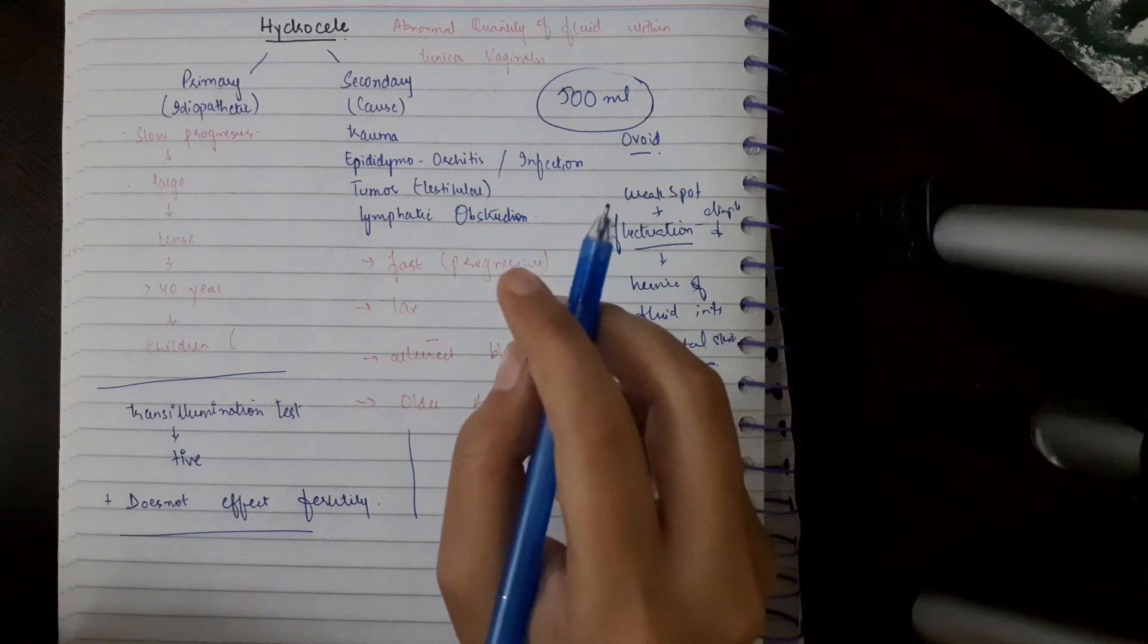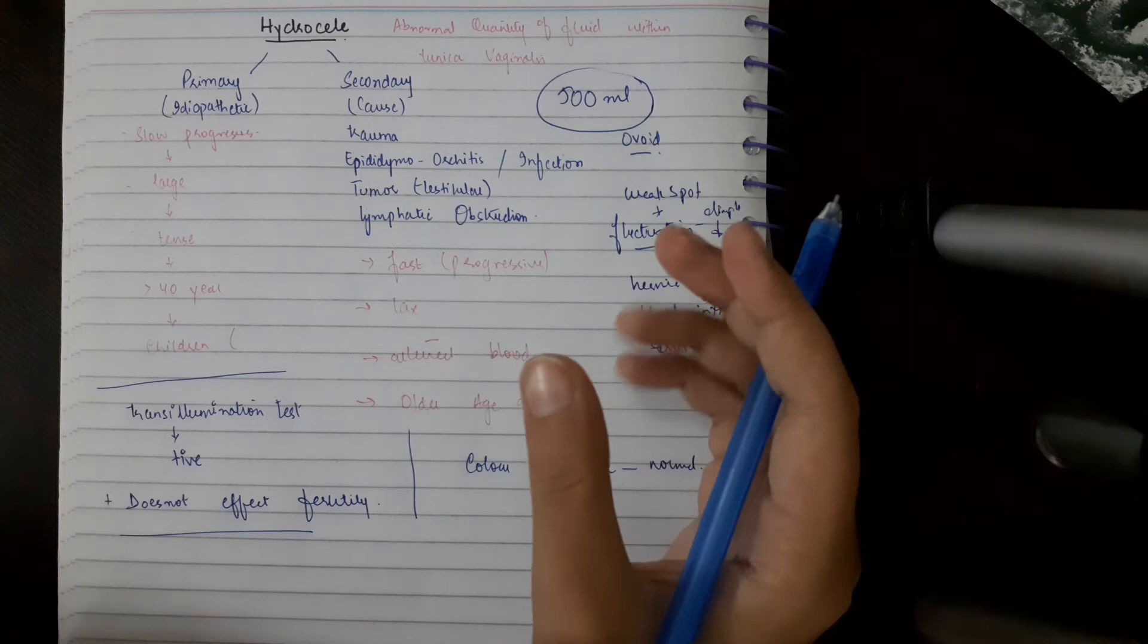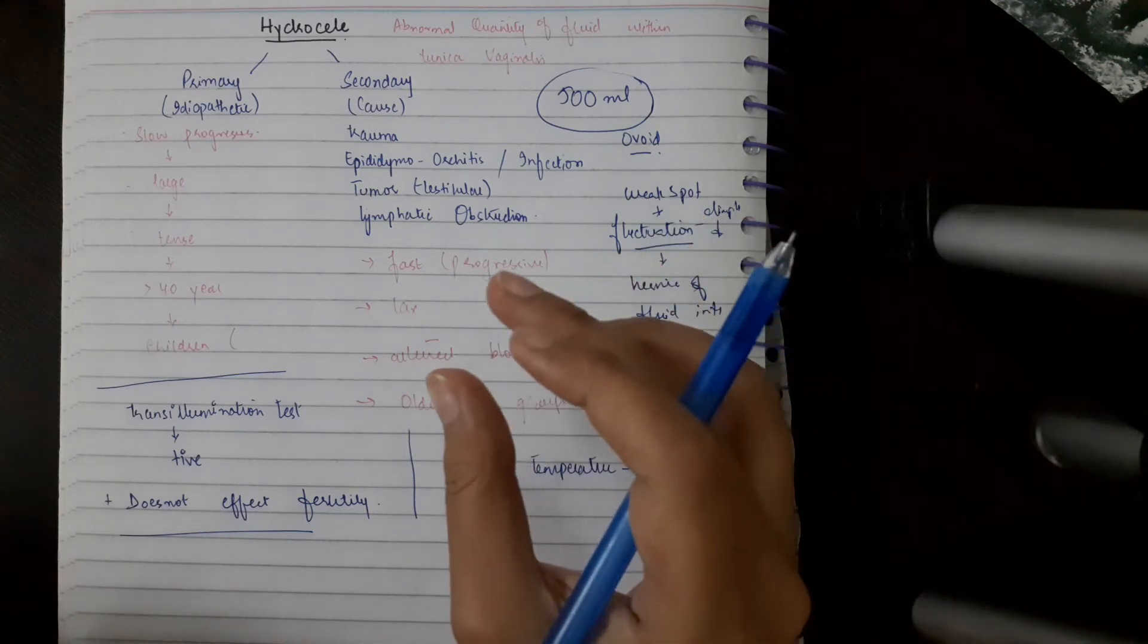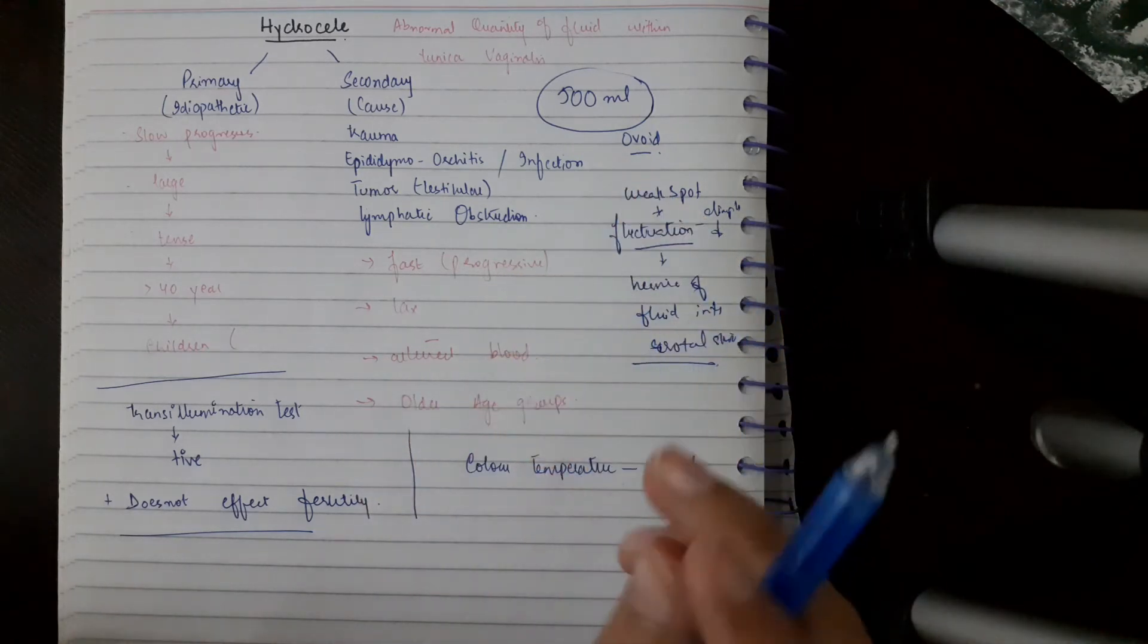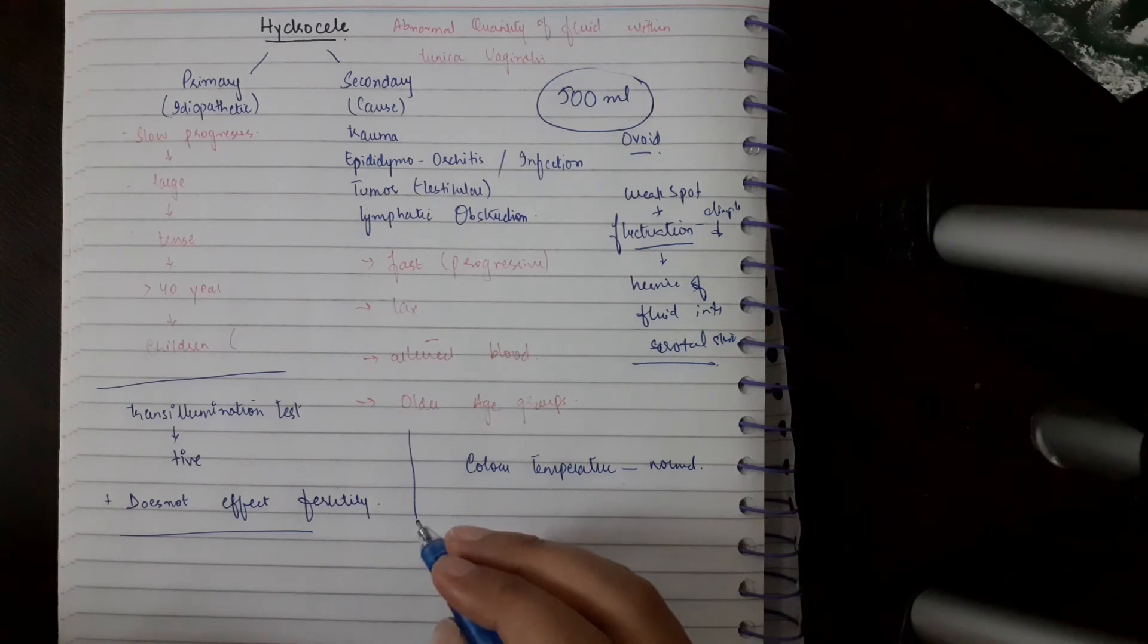Then comes the composition. The composition is clear straw-colored fluid, and it is rich in proteins. There may be fluid thrill present if the hydrocele is large enough, and dull percussion note. Usually transillumination is present.